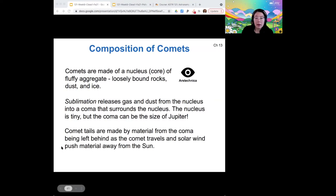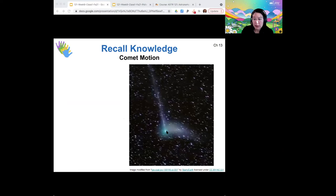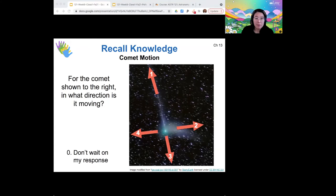And comet tails are made from material from this coma being pushed away both by the solar wind and as it's left behind as the comet continues in its orbit. So here's a picture of what I mean by that. The nucleus of this comet would be a very tiny pinpoint at the center of this image. This is called the dust tail, and then this tail is called the ion tail. Based on your reading, can you tell which direction is this comet moving?